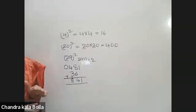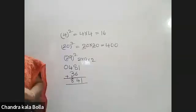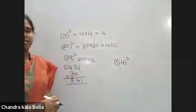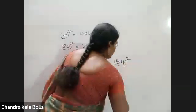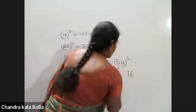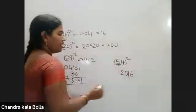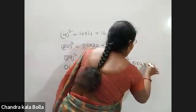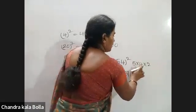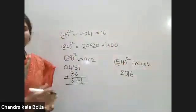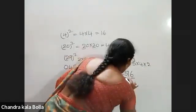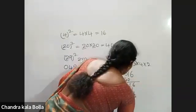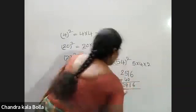For 54 whole square: 4 squared is 16 — ones place value. Next, 5 squared is 25. Then 5 into 4 into 2 is 40. Just one space. We have the value: 6, then 1, next 9, 2 — giving 2916.